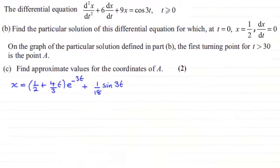Hi there. Now for this last part, part C, we're given that on the graph of the particular solution defined in part B, which by the way I've copied down here, the first turning point for T greater than 30 is the point A. And what we've got to do for part C then is find approximate values for the coordinates of A. And it's only worth two marks.